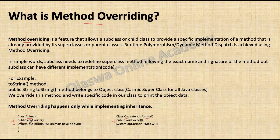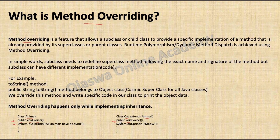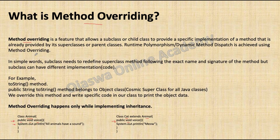The second point is: in the case of return type, it should be exactly the same. If the return type is void, the overridden method should also have return type void. If the return type in the superclass is int, you cannot have float or any other return type in the subclass method signature. The return type should be the same as the superclass method. Again, the method name and the parameter list should also be exactly the same — you cannot change the parameter list while overriding a method.